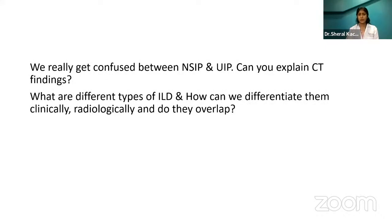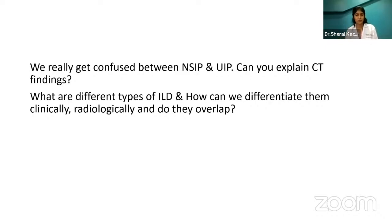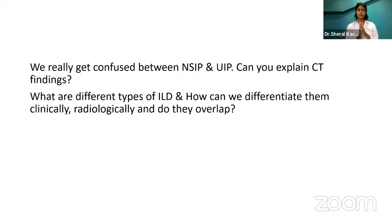We often get confused with NSIP and UIP on CT findings. At times patients ask you to explain what is really happening to them. You need to explain which factors are affected — not in a very scientific way, but in simple language. What is the affection, how can they overcome it, what type of progression to expect. You need to know the CT findings, explain them briefly, and tell what type of ILD it is.